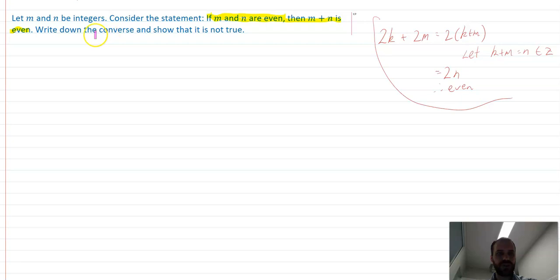Write down the converse and show that it's not true, because remember, sometimes converses aren't true. So what's the converse? If M plus N is even, then M and N are even. So we turn the implication around.